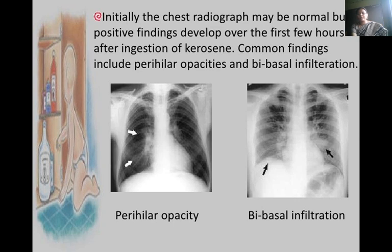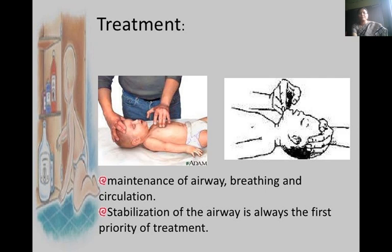Initially, the chest radiograph may be normal, but positive findings develop over the first few hours after ingestion of kerosene. Common findings include perihilar opacities and bibasal infiltration. You can see in the left picture perihilar opacity, and bibasal infiltration in the second picture.